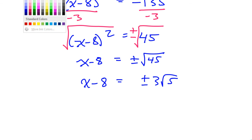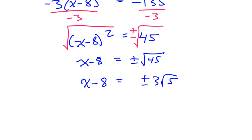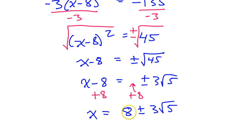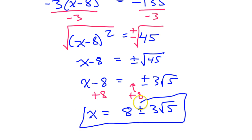Finally, we need to get x by itself by adding 8 to both sides — it goes right in the front. So the final answer will be x is equal to 8 plus or minus 3 radical 5. These are not like terms, so I cannot add these together — this will not make 11 radical 5. It has to stay like this.